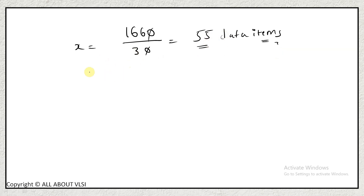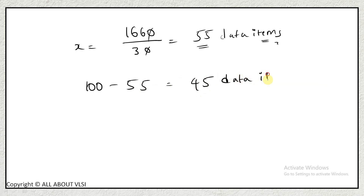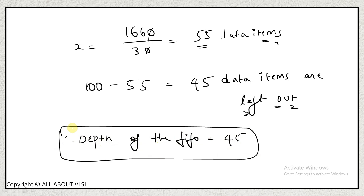The total data items being transferred is 100, but during 1660 nanoseconds we can read only 55 data items. So the data items left over are 100 − 55 = 45 data items. The depth of the FIFO is 45. This was Case 1.